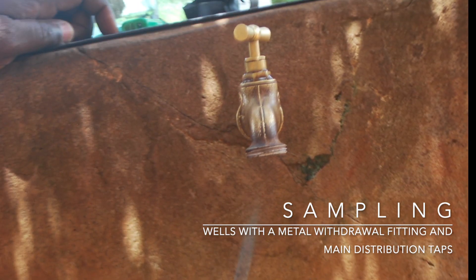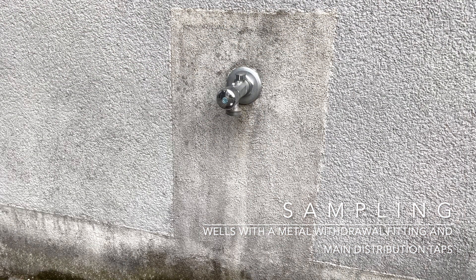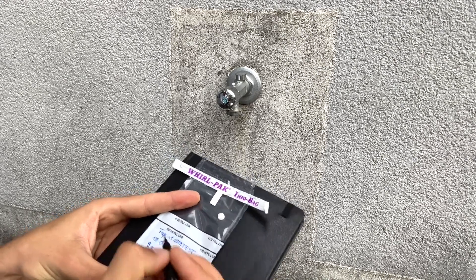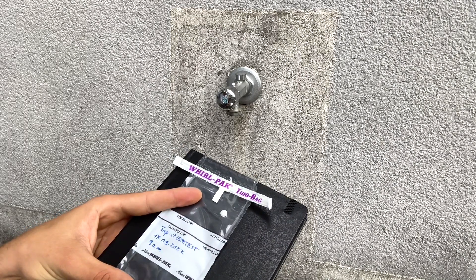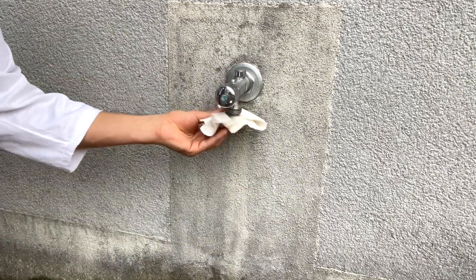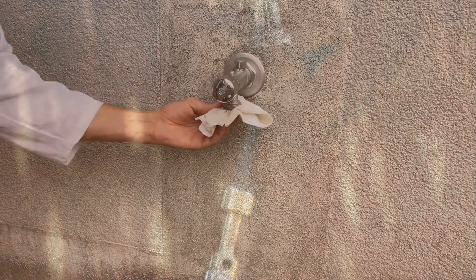When taking water samples from wells with a metal withdrawal fitting or from main distribution taps, proceed as follows: Label the sample bag with a waterproof pen and indicate the ID, date, and time of sampling. Then wipe the end piece with alcohol.